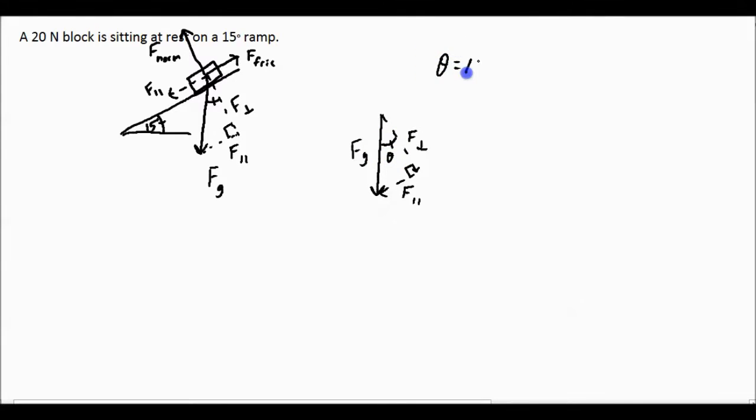So this is our theta right here. So theta is 15 degrees. Our FG, which is equal to our hypotenuse, because it's opposite of the right angle, is equal to 20 newtons. Our F perpendicular is our adjacent side. And our F parallel is our opposite side.